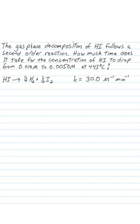The first thing we want to do is write down the information that we're given. So we know that the concentration of HI at time zero is equal to 0.010 molar. I know the concentration of HI at some time T is equal to 0.0050 molar.